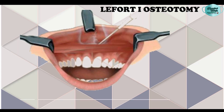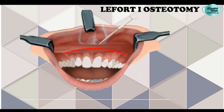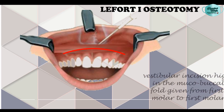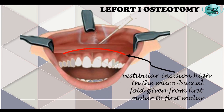For the surgical technique, the vestibular incision is given in the high mucobuccal fold, starting from the first molar region on one side to the first molar region on the other side. This exposes the lateral and medial buttresses of the maxilla. As shown here, the incision is given in the mucobuccal fold of the maxillary vestibule from one molar region to the other.